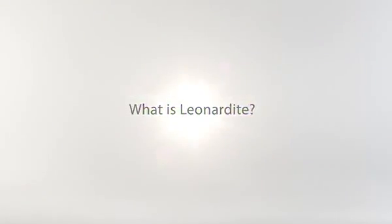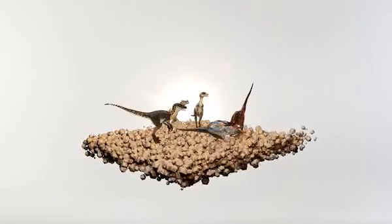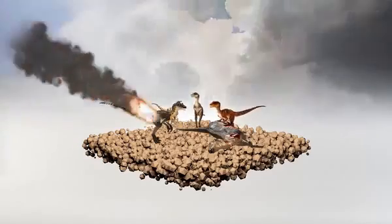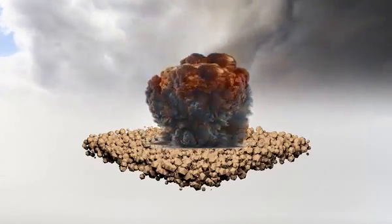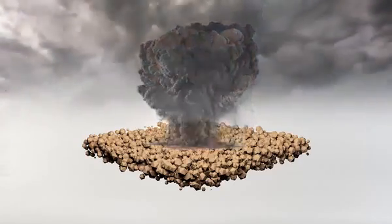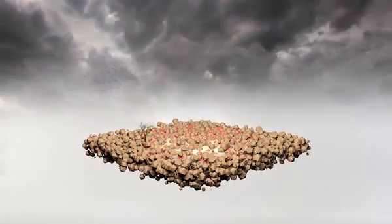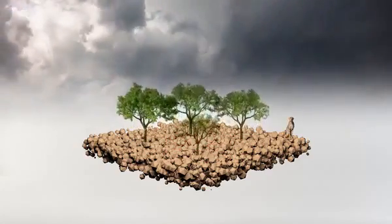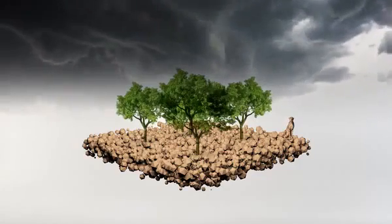Lenodite forms as a result of a 70 million year old natural, chemical and biological humification process through reformation of animal and plant residues in special temperature, humidity and pressure conditions. Compared to other organic products, Lenodite gains its edge with high cation exchange capacity and high percentages of humic and fulvic acids.